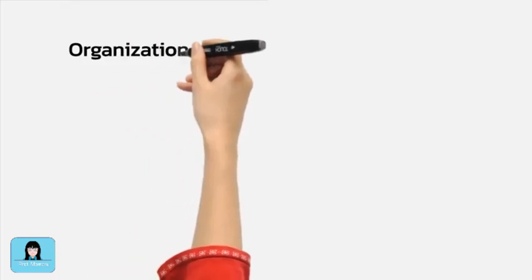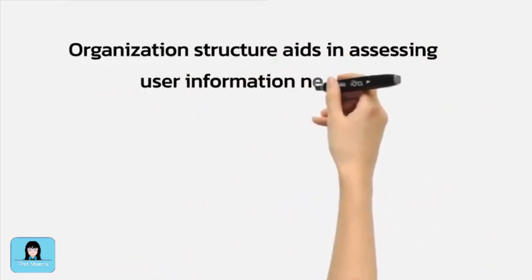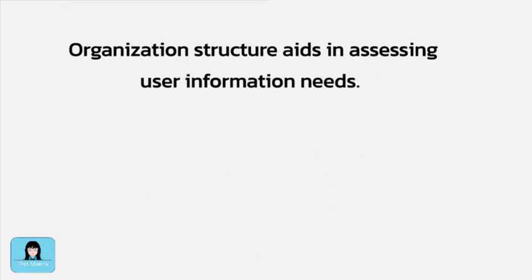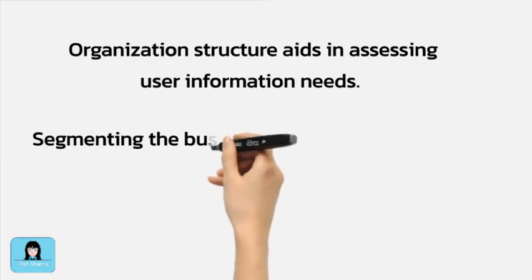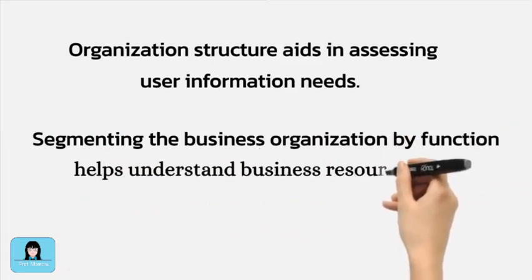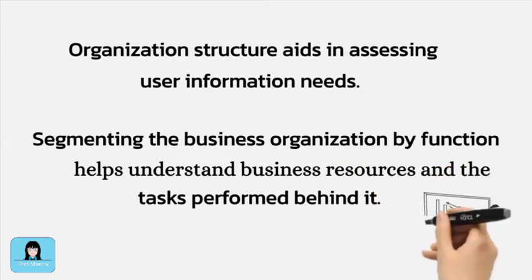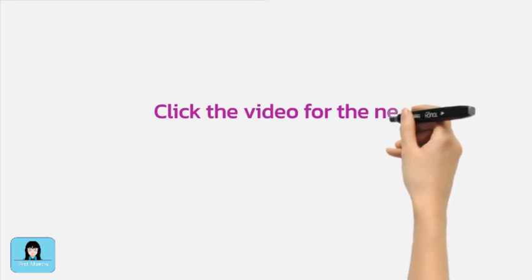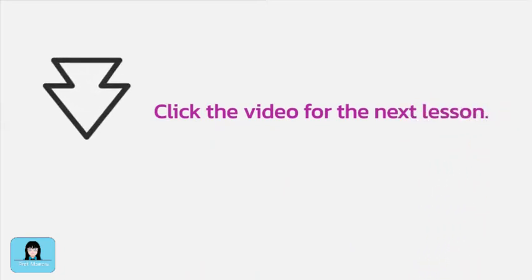To recap, organizational structure facilitates understanding of the distribution pattern of responsibility, authority, and accountability, which is essential for assessing user information needs. Segmenting the business by function helps understand the business resources and the tasks performed to handle business resources. Click the video on the left screen for the next lesson.